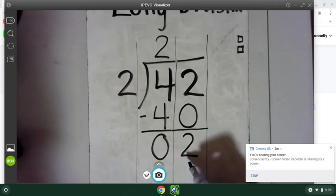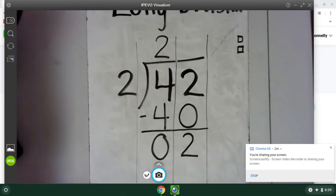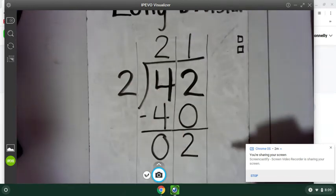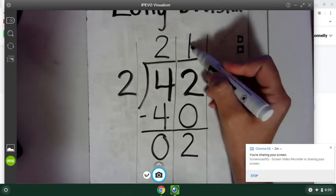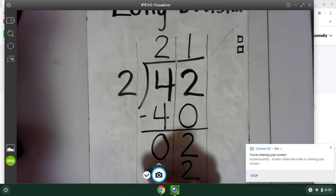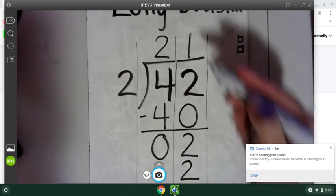So now I have two of those little cubes, and I want to make groups of two. Well, I can do that. I can make one group. And so now I have one group of two equals two, and there's nothing left. So my answer is 21.